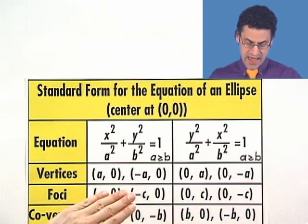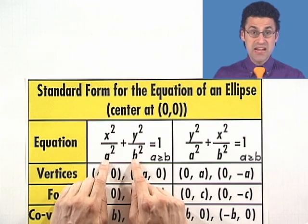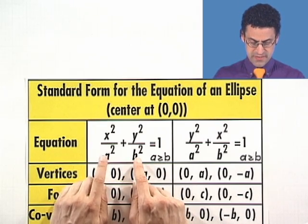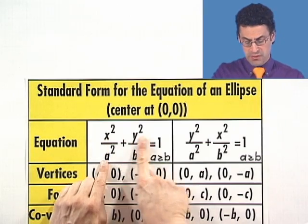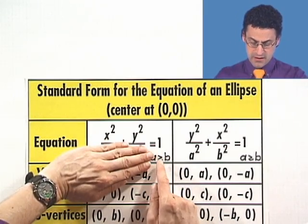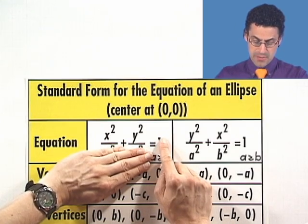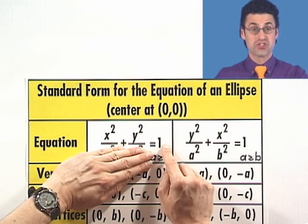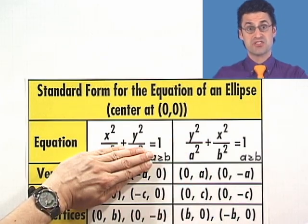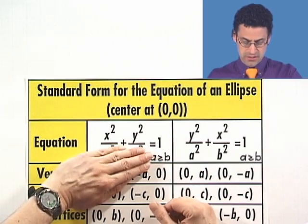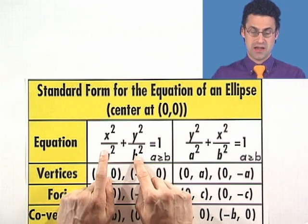Notice that if, in fact, the a and the b were equal, so think of this as being a squared and think of this as being a squared, then if I were to multiply everything through by a squared, they would simplify off here, I'd get an a squared here, and I'd be looking at the equation of a circle of radius a. So in some sense, this is generalizing the idea of a circle, because I'm allowing different values down here.